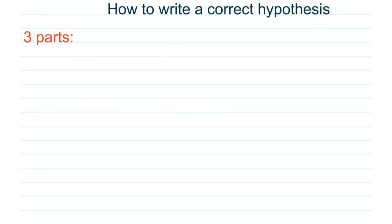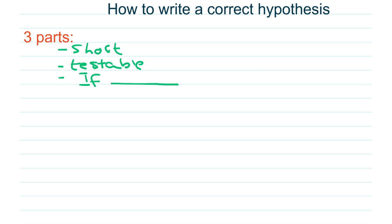The reason why finding the independent and dependent variable is important is because in the scientific method, you have to have a hypothesis. In order to have a hypothesis, you have to identify the dependent and independent variable first. There are three parts to writing a correct hypothesis: it has to be short, it has to be testable, and it has to be phrased as — if independent variable, then dependent variable. If I change this, then this will happen.